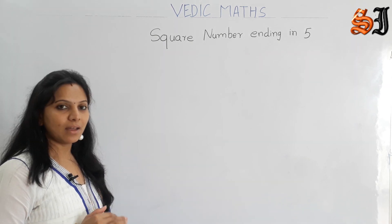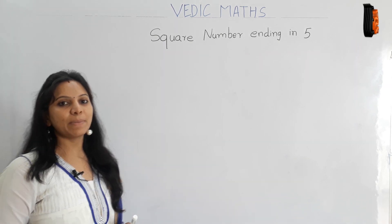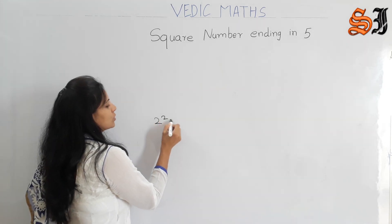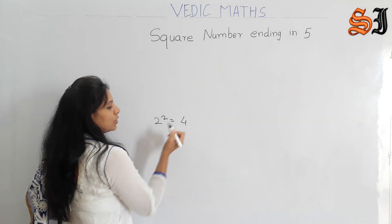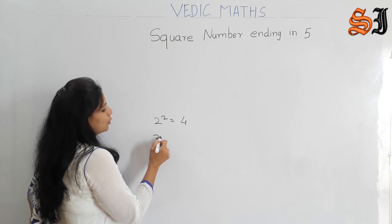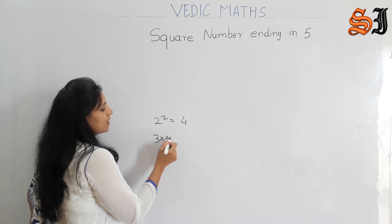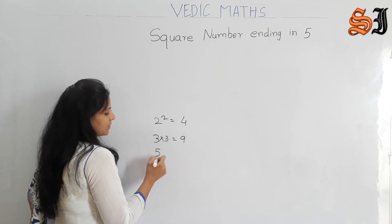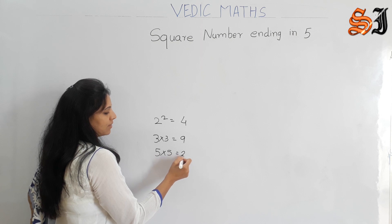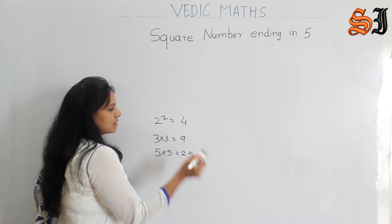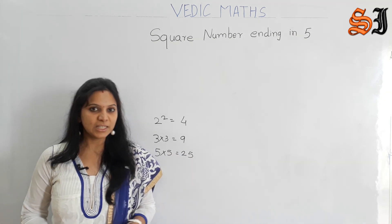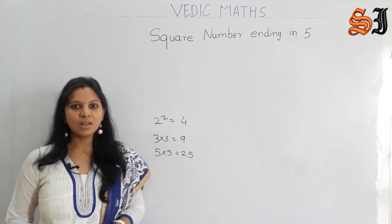The number multiplied by itself — that is the square of a number. Suppose 2 squared: 2 into 2 is 4. 3 into 3, 3 squared is 9. 5 squared is 25. Square number means the number multiplied by itself.